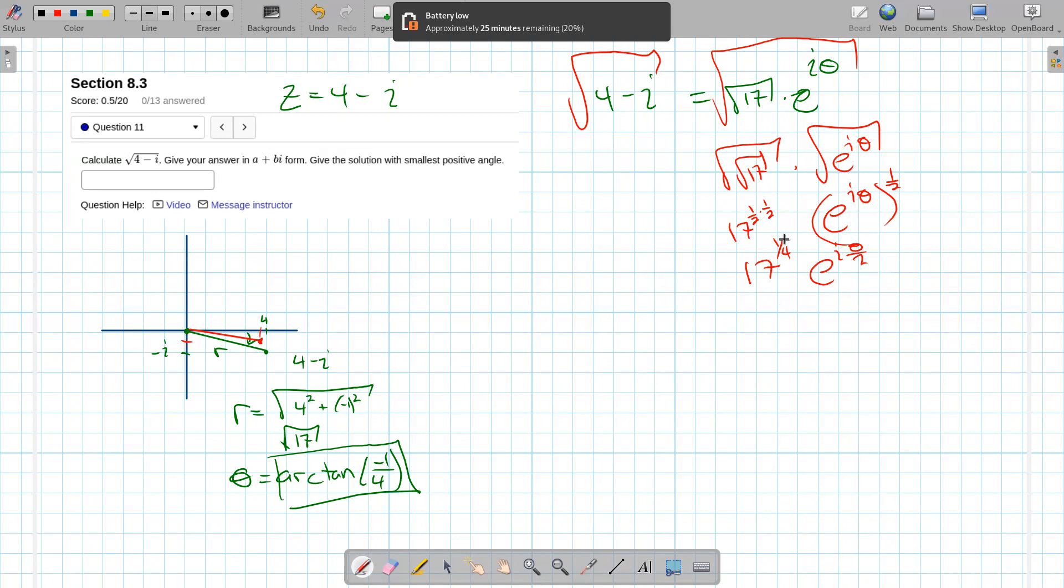Now we have that right here also, because we know Euler's formula says that the e to the i angle is cosine plus i sine. So now I'm going to take 17 to the one-fourth times the cosine of my angle, which is this theta over here, cut in half,